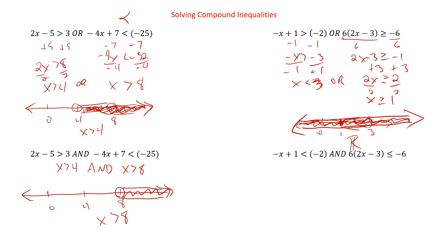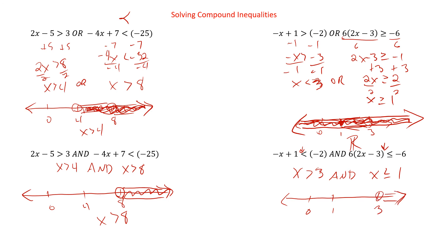Now, if I switch the signs — notice the signs here are both switched — when we solve this we're going to get exactly the opposite: x is greater than three, and x is less than or equal to one. So now when we're graphing this, we'd have zero, one, and three. We'd need everything this way and everything this way. But where do those overlap? There's no overlap there. So since there's no overlap — and that's what we need for AND — this would be no solution, which could also be written as the empty set. And the graph would just be an empty graph. No value will be both bigger than three and less than or equal to one.